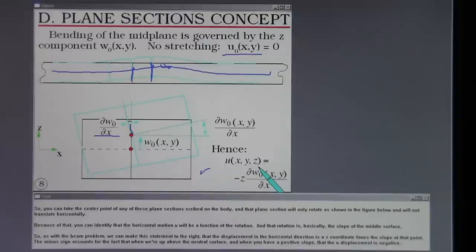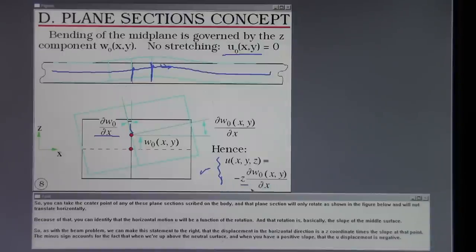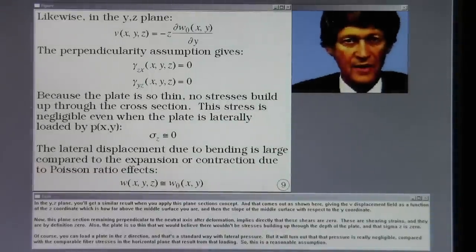So as with the beam problem, we can make this statement to the right, that the displacement in the horizontal direction is a Z coordinate times the slope at that point. The minus sign accounts for the fact that when we're up above the neutral surface, and when you have a positive slope, that the U displacement is negative.